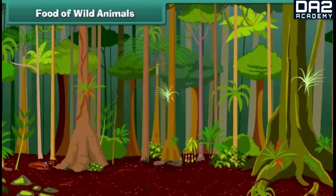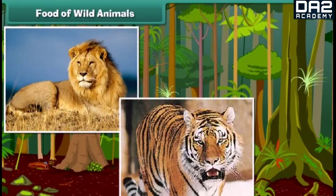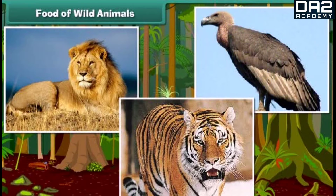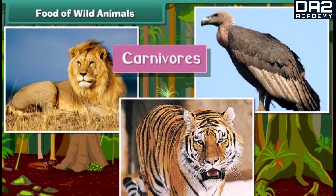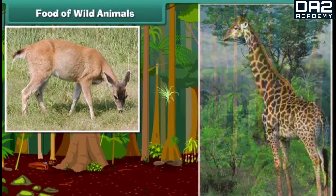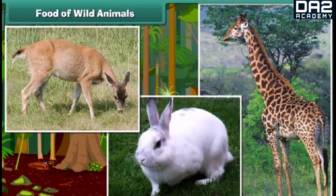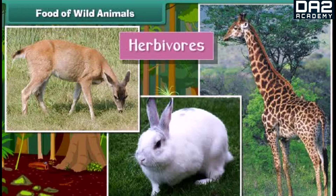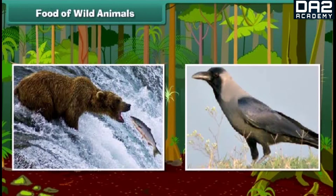Let us look at what wild animals eat for food. Lions, tigers, and vultures are carnivorous animals — they eat the flesh of other small animals. Deer, giraffes, and rabbits are herbivorous animals, as they eat only plants.